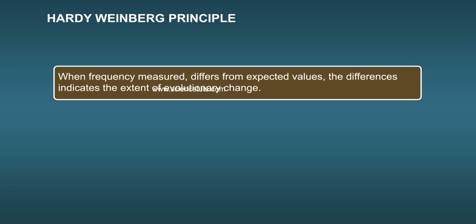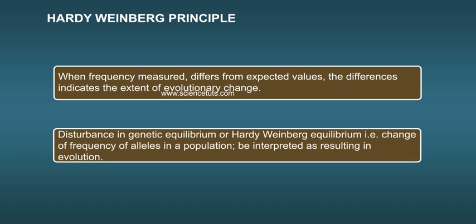When frequency measured differs from expected values, the differences indicate the extent of evolutionary change, disturbance in genetic equilibrium or Hardy-Weinberg equilibrium, i.e., change of frequency of alleles in a population would be interpreted as resulting in evolution.